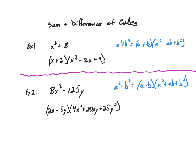Finally, we looked at the sum and difference of cubes. These are special polynomials. The sum of cubes: a cubed plus b cubed equals (a plus b)(a squared minus ab plus b squared), where a and b are the cube roots of each term. The difference of cubes: a cubed minus b cubed equals (a minus b)(a squared plus ab plus b squared).